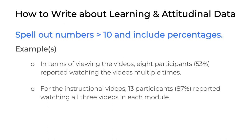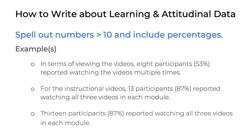Here's another example: 'For the instructional videos, 13 participants, or 87%, reported watching all three videos in each module.' In this instance, the number 13 is written as a numeral because it's greater than 10. If you wanted to start that sentence with a number, then you would need to spell out 'Thirteen participants' because it's starting the sentence. And of course, in both of these examples, the percentage — 87% — is provided in parentheses.